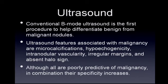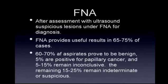Conventional B-mode ultrasound is the first procedure to help differentiate benign from malignant nodules. There are some ultrasound features associated with malignancy, such as microcalcifications, hypoecogenicity, intranodular vascularity, irregular margins, and an absent halo sign. Although all of these are poor predictors of malignancy, in combination their specificity increases.